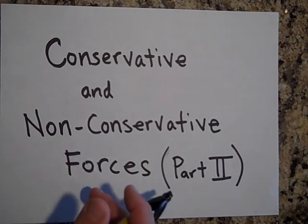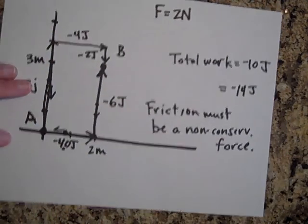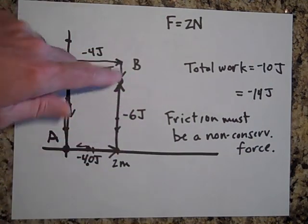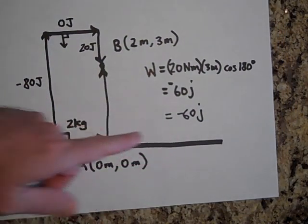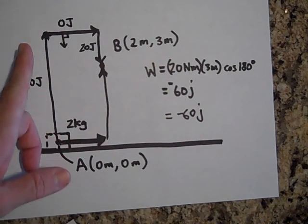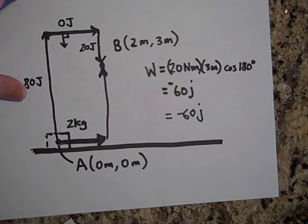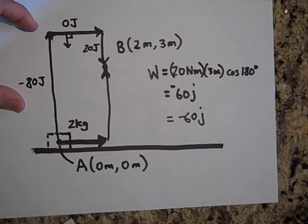This is conservative and non-conservative forces, part two. I should mention from the last video: when I was doing the frictional force example, that was a table viewed from above, so there's no vertical movement. But in the other example, that was the ground, and moving that direction means moving upward — that's why work was being done by the force of gravity. That's not a small point; I'll mention it in class too.